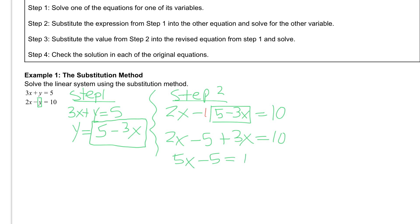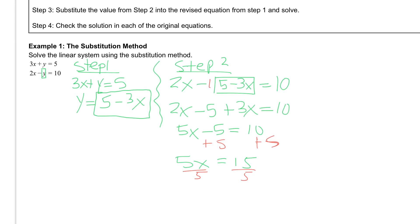Solving for x, we would then add 5 to both sides. And we get 5x equal to 15. And then finally divide both sides by 5, and we get x is equal to 3.